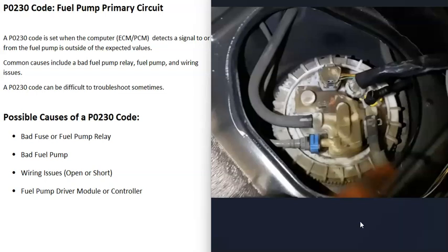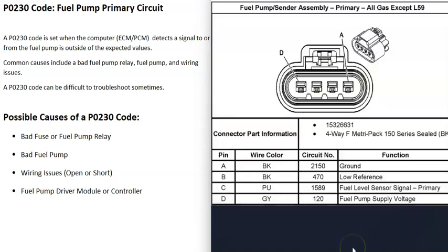If the fuses and fuel pump relay are good, the next thing is to find out if the fuel pump itself is bad or if there's an open or short in the wiring. A very common method is to use a multimeter and test the voltages at the fuel pump. You'll need a wiring schematic for your particular vehicle. If you know which pin should be getting voltage, put the key in the on position and check whether you're getting the correct voltage back to the fuel pump. If you are getting correct voltage and there's no problem there, then very likely the fuel pump has gone bad and needs to be replaced.